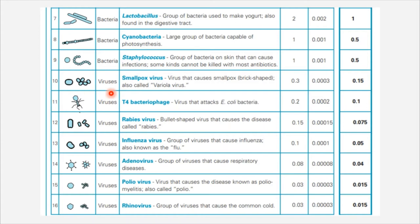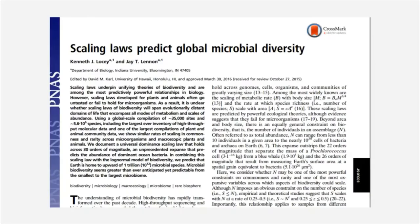Once we get down through bacteria, we get to even smaller microbes such as viruses. Among the smallest viruses include poliovirus and the rhinovirus. Rhinovirus is one of the most common causes of the upper respiratory infection we know as the common cold, and this is 0.03 micrometers in diameter — many hundreds of times smaller than the largest microbes. Hundreds of thousands of viruses can fit inside of a bacterium, and hundreds of bacteria could fit inside of a protist. We're talking about a very wide diversity of microbes when we are studying microbiology.